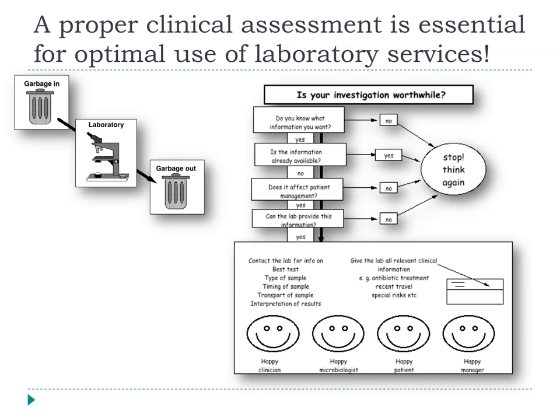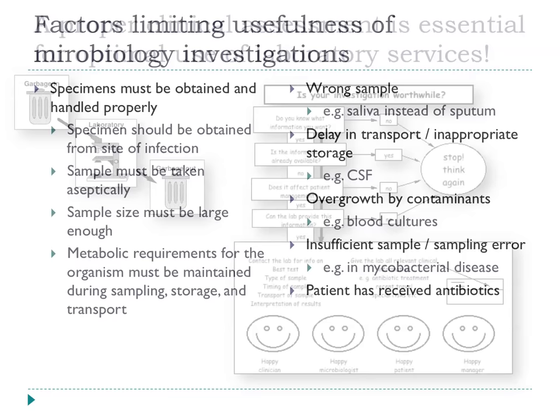It's important that clinicians provide the lab with as much information as possible. If the lab knows the patient is already on antibiotics, they may take additional steps to try and recover a microorganism. If the patient has had recent travel, they might look for organisms such as brucellosis if the patient has just returned from somewhere where brucellosis is common. Special risks also matter — if the individual is a veterinarian or a farmer, they may have caught a disease from animals. All these things can help.